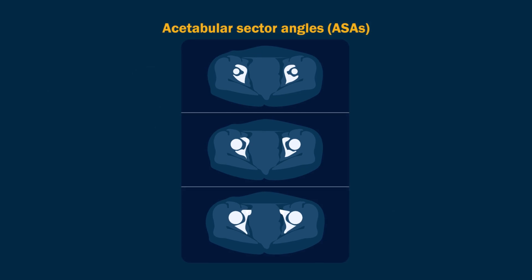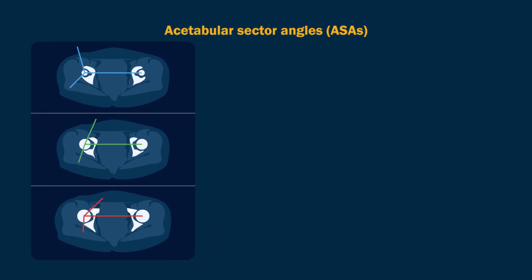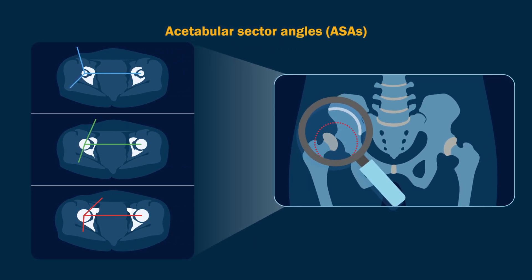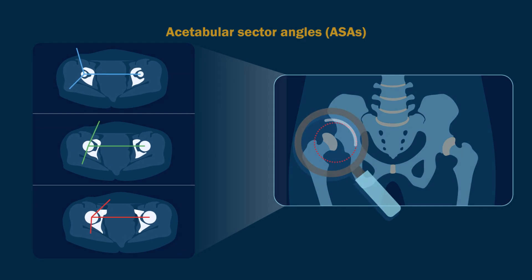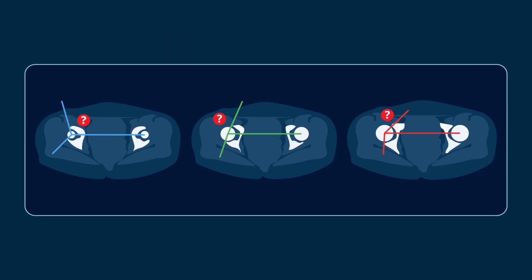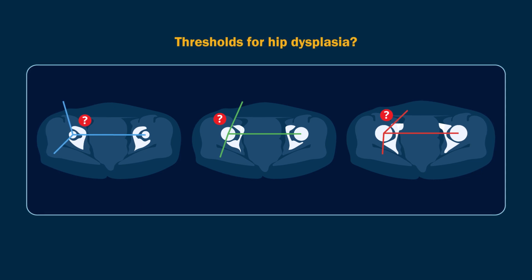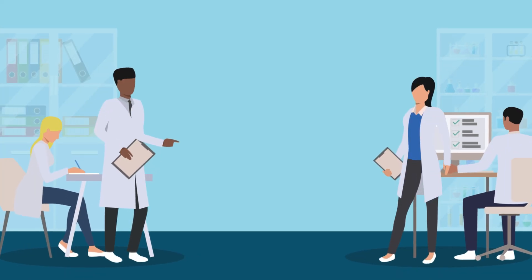Acetabular sector angles, or ASAs, which measure the degree of femoral head coverage provided by the acetabulum, may be useful in identifying and characterizing dysplasia. However, defining normal ASA values is important for establishing thresholds for hip dysplasia.